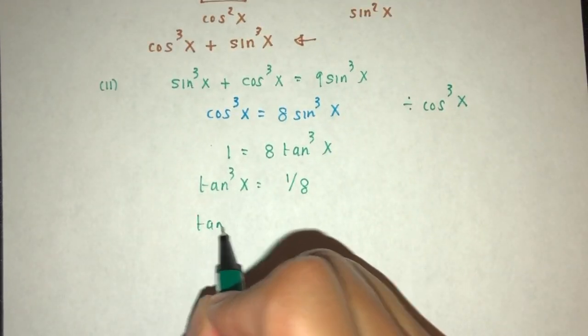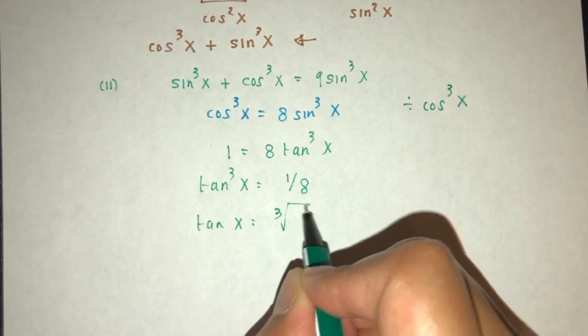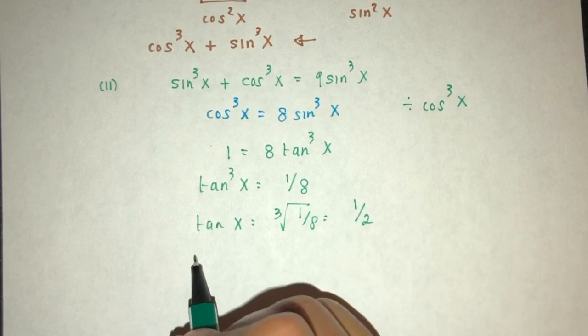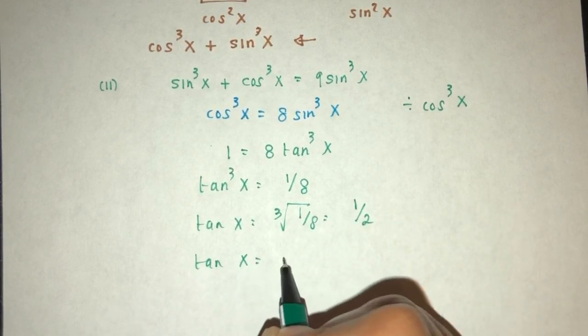Now we understand tan, this will be cubic root 1 over 8. That will be 1 over 2. So tan x is equal to 1 over 2.